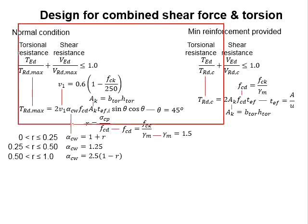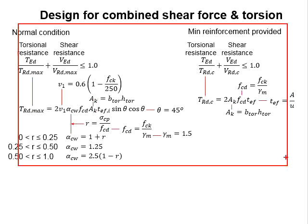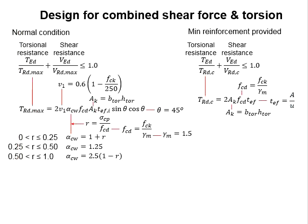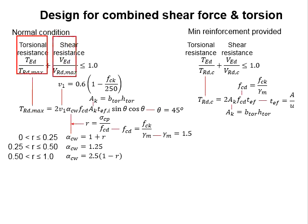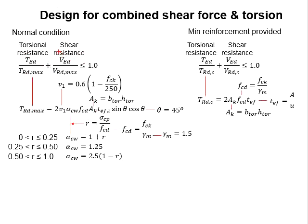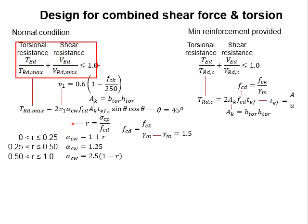These are the equations used to check the combined actions of shear force and torsion. Under normal circumstances, this equation is applied and it has two main components: the torsional resistance and the shear resistance. Within each component there is a ratio of the applied load versus the capacity. The summation of these two elements must be less than 1.0.